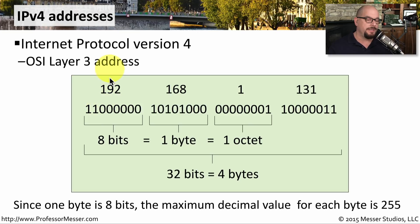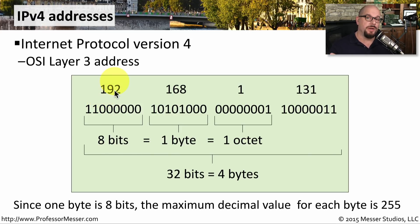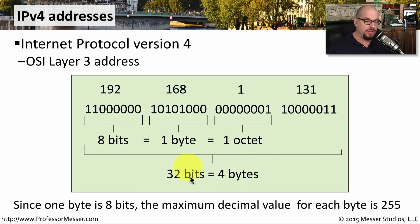Most often you're going to see an IPv4 address written in decimal. Since we only have 8 bits per group, the maximum value in each group is 255, meaning the maximum address you'd ever see is 255.255.255.255. This IPv4 address is 32 bits long, or four bytes. You'll become accustomed to seeing these four octets used to describe the network ID and host ID of devices on your network.